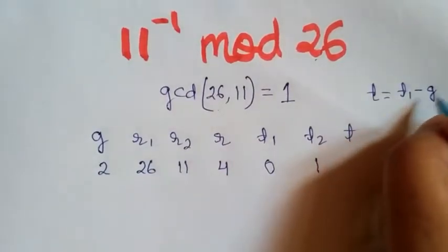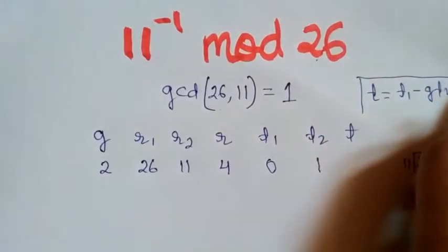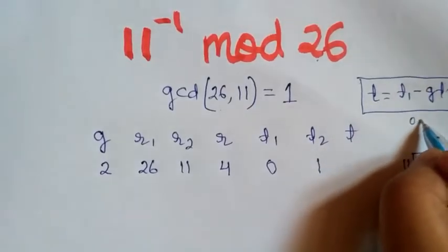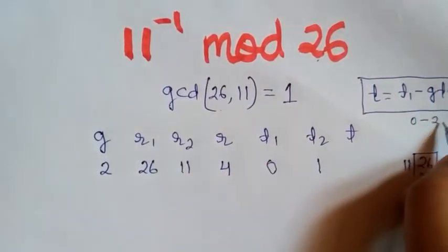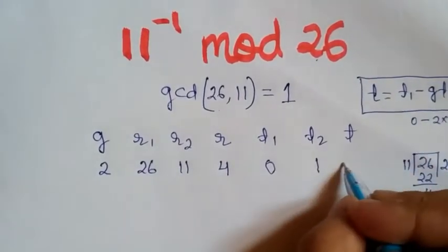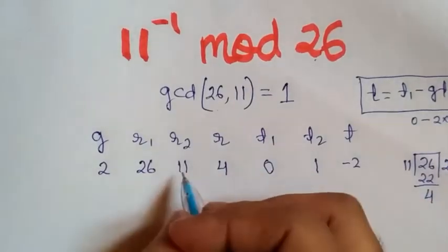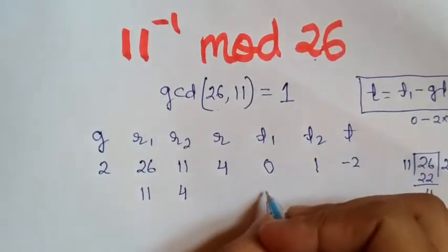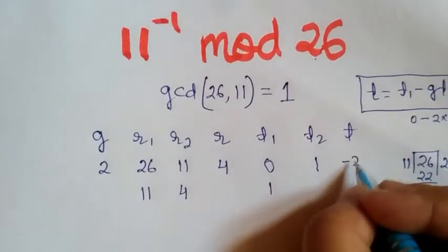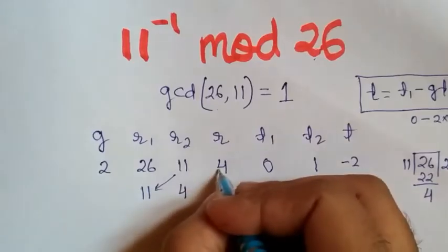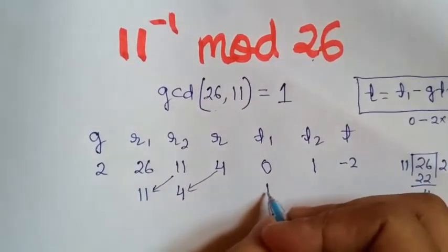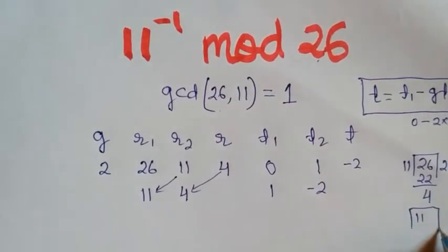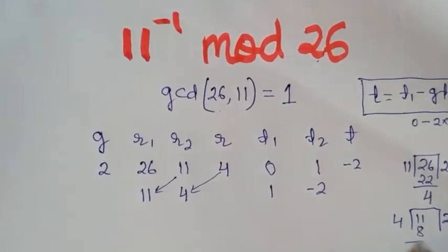T equals T1 minus G times T2. So T1 is 0, minus G which is 2, times T2 which is 1, giving minus 2. Now R2 value comes to R1 giving 11, R comes to R2 giving 4, T1 becomes 1, and T2 becomes minus 2.